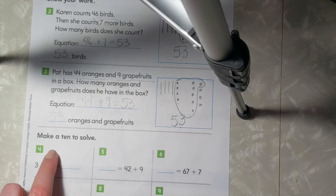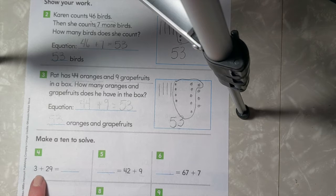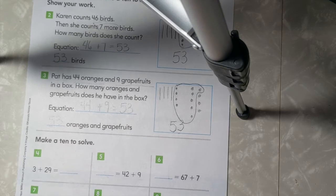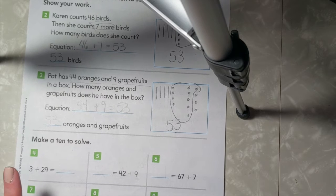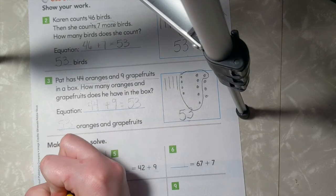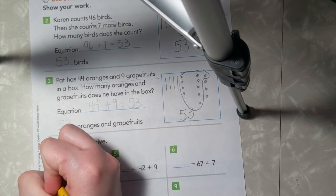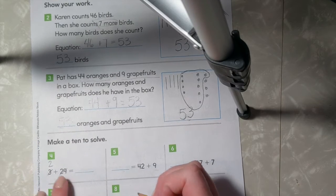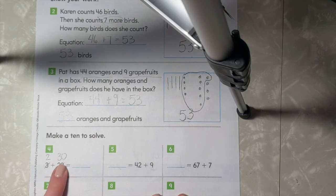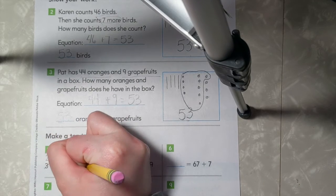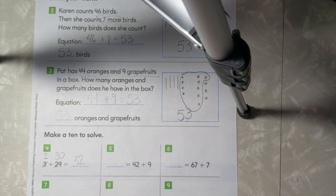In the next section, it says make a 10 to solve. Number 4 says 3 plus 29 equals blank. When I see the number 29, I know that if I add just one more, it will give me the number 30. So I'm going to borrow a 1 from the 3, so that will become 2, and this 29 will become a 30. Now I know that 30 plus 2 will give me 32. So 3 plus 29 is the same as 2 plus 30, and it gives me 32.